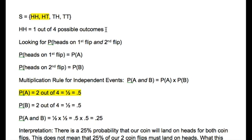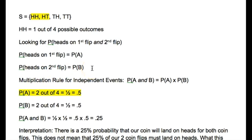Because each outcome is equally likely, we're looking for the probability of heads on the first flip and the second flip. The probability of heads on the first flip we'll call the probability of event A, and the probability of heads on the second flip we'll call the probability of event B. Remember these are independent events. The multiplication rule for independent events is: the probability of event A and event B is equal to the probability of A times the probability of B.